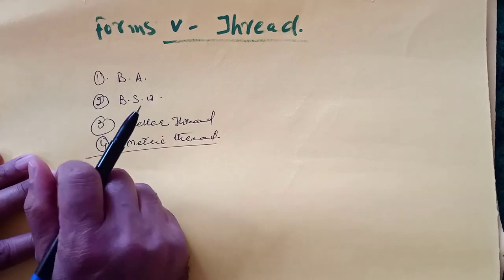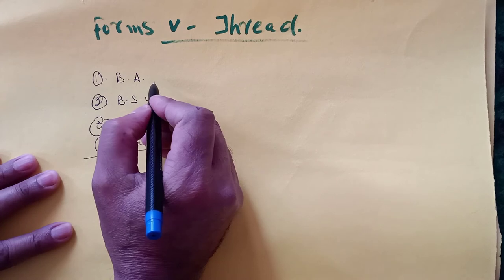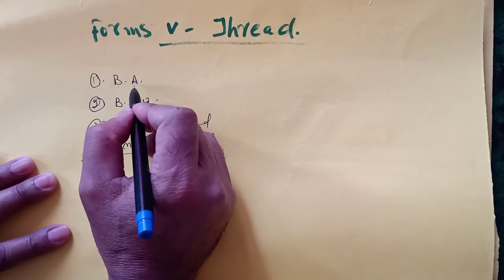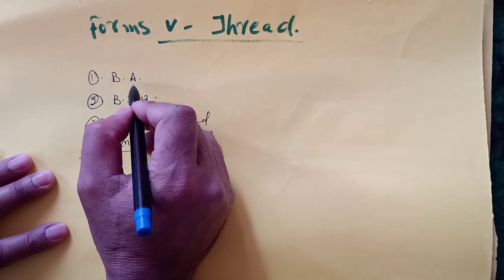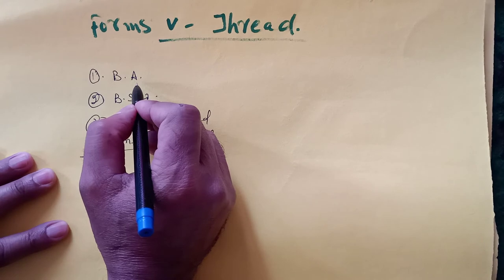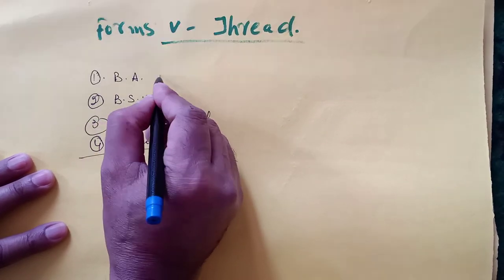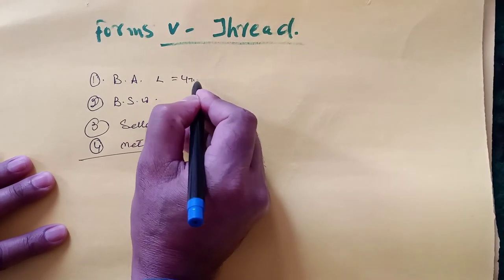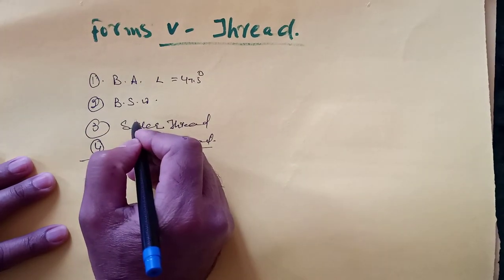In case of BA thread, BA thread is British Association thread. This form of thread is recommended by British standard institution. The angle of this thread is 47.5 degrees.